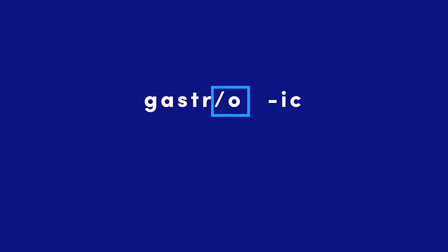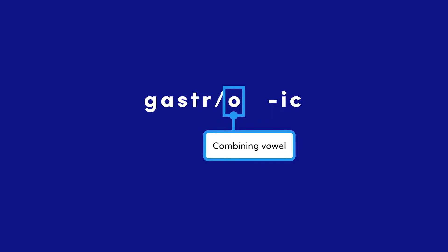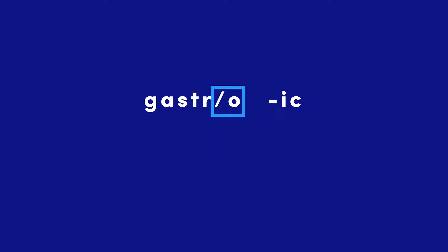Let's separate the word parts in 'gastric' and examine them closely. You may see words that have a slash and a vowel at the end of them. It's most common to see a slash O. This O is called the combining vowel. The role of the combining vowel is to help with pronunciation and spelling. The slash indicates that the combining vowel may or may not be required when connecting the word root to other word parts.